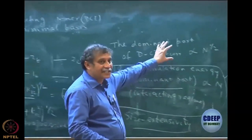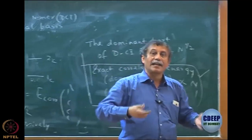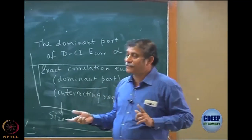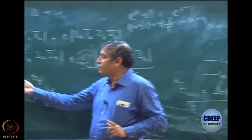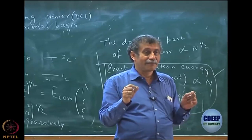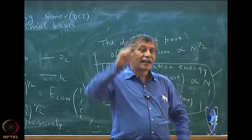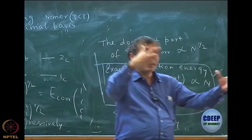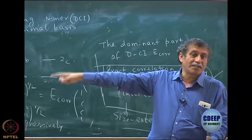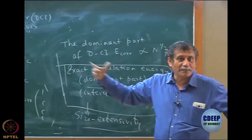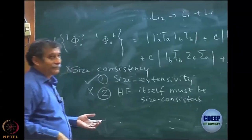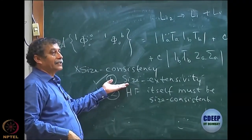Now I know that DCI is not a size-extensive theory, but I can have a size-extensive theory like MP2. MP2 is size extensive. I can have coupled cluster later — but even then the final result may not be size consistent because requirement two may not be followed. I have to first ensure that the Hartree-Fock is size consistent.